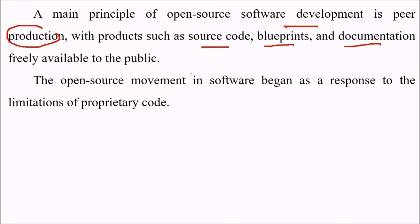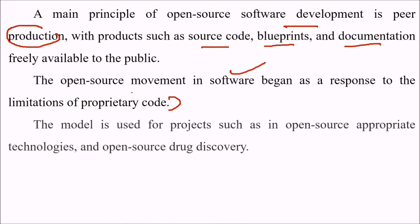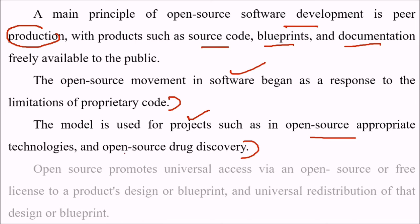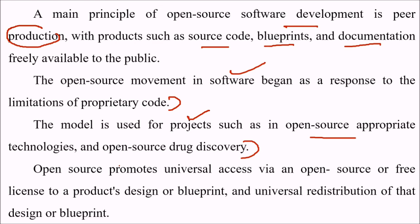The open source movement in software began as a response to the limitations of proprietary code. The model is used for projects such as open source appropriate technology and open source drug discovery. Open source promotes universal access via an open source or free license to a product design or blueprint, and universal distribution of that design or blueprint.